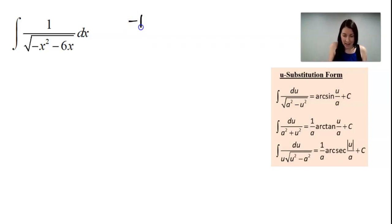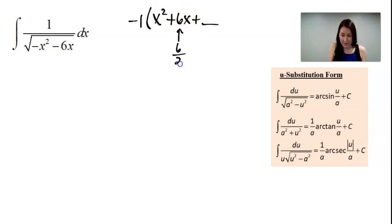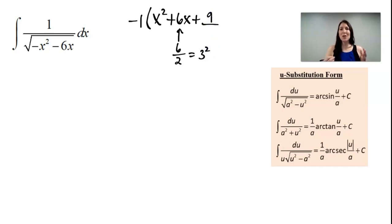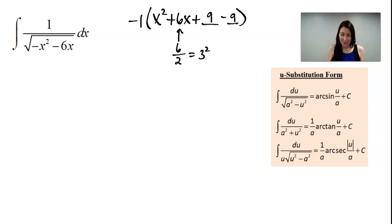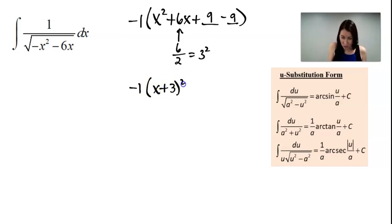I am going to factor out a negative 1 from x squared and 6x. Now I'm going to complete the square. To complete the square, I take the b value, divide it by 2, and then square that. When I do that, I can see that completing the square requires adding 9. I can't just add 9 because that changes the problem, so I subtract 9 as well, essentially adding 0. Now I can rewrite this as the binomial squared: x plus 3 squared.